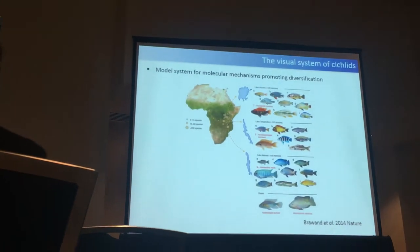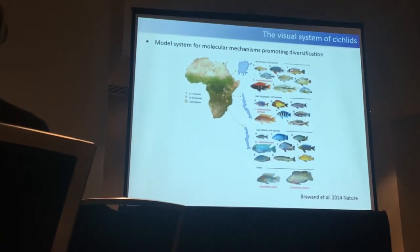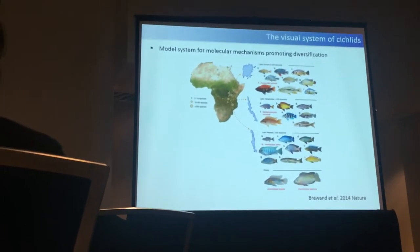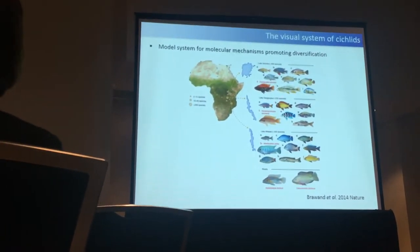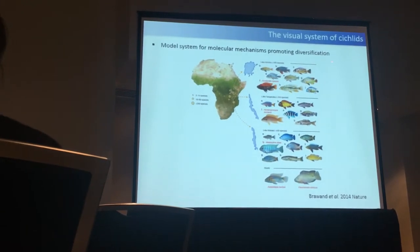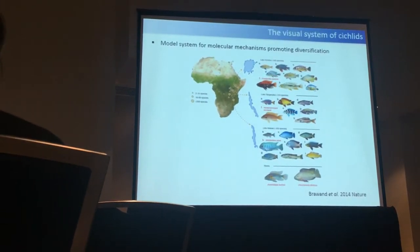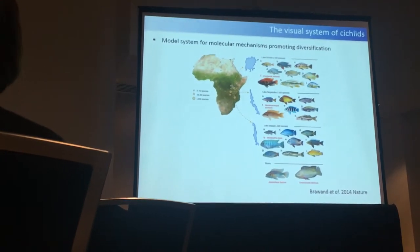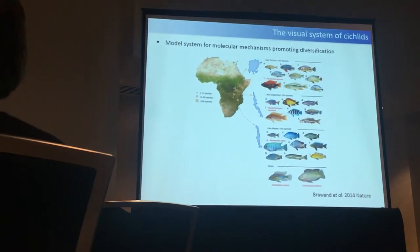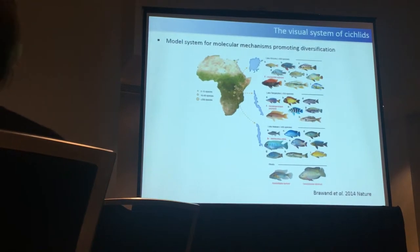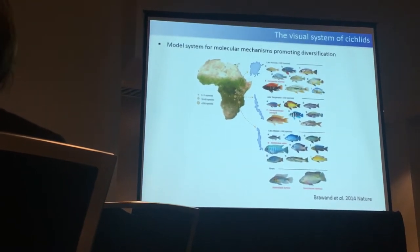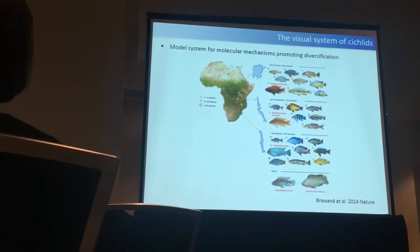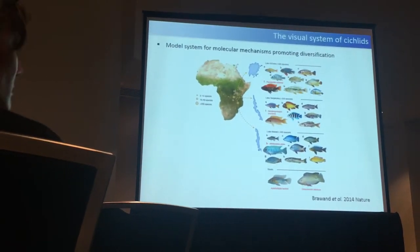Cichlids are this famous example of adaptive radiations. They diversify a lot — for example in terms of coloration — and this inspired people to look at the visual system and see how it evolves in correlation to these coloration differences, but also as a response to different light environments in different lakes.